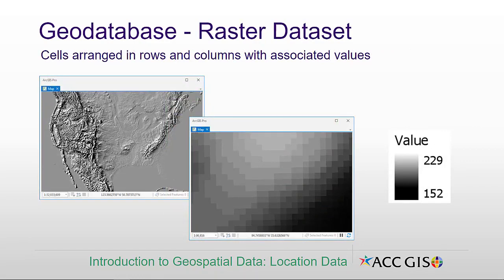A raster data set is a single GeoDatabase object in which cells are arranged in rows and columns with associated values. In the example below, on the left-hand side, you can see a hillshade of the United States, which is the illumination of the landscape. If you zoom all the way in, it pixelates into individual cells assigned a value — the more illuminated the landscape, the brighter and higher the value; the darker the landscape, the lower the value.